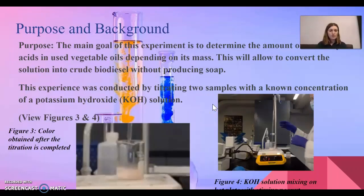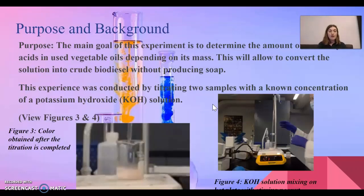You might be asking yourself: what is the main goal of this experience? Why would we be doing it? The goal is to determine the amount of free fatty acid in already used vegetable oil depending on the mass that we have. This will allow us to convert the solution into crude biodiesel. In this experience, we're going to have two different samples with a known concentration of KOH and be able to perform the titration.